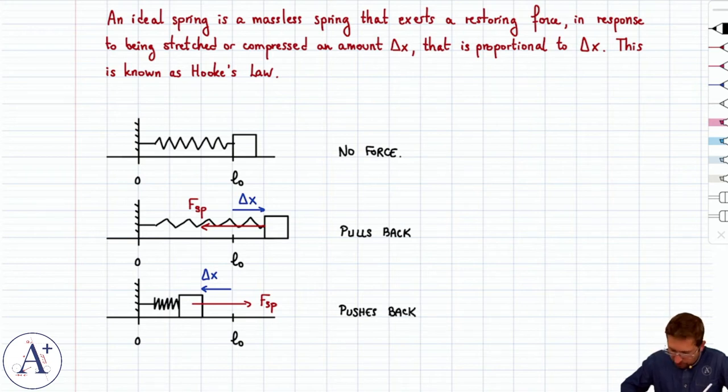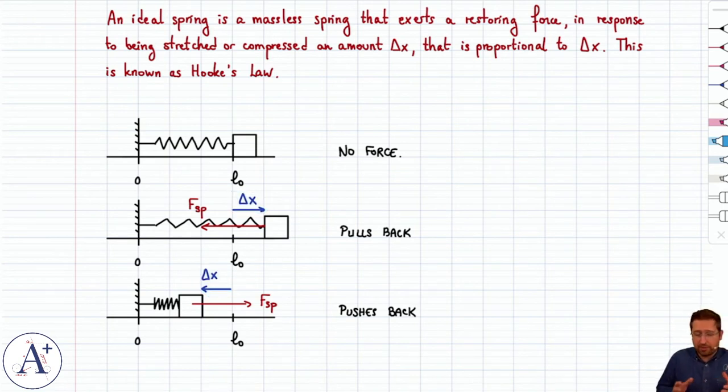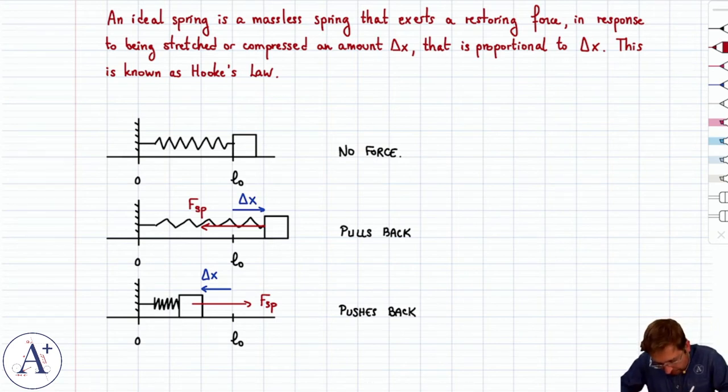Now in terms of direction, it pulls back with a direction that's opposite delta x - delta x is one way, spring force goes the other. Same is true here: delta x is to the left, spring force is to the right. So in terms of direction, it does the opposite of what you do to it. In terms of magnitude, Hooke's law says that the spring force F_sp is proportional in magnitude to delta x through a constant that we usually call k. So I'm going to write Hooke's law the way that you find it in books.